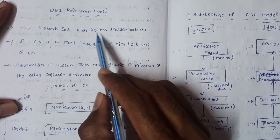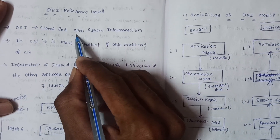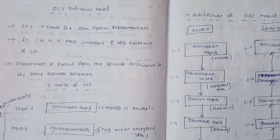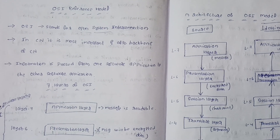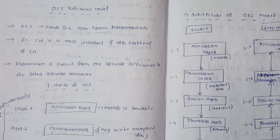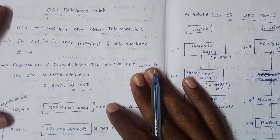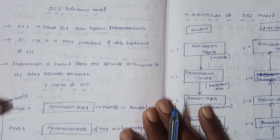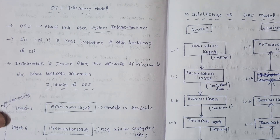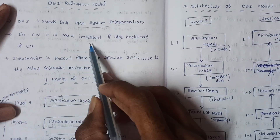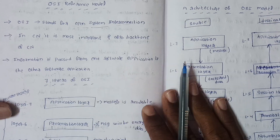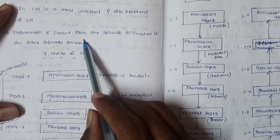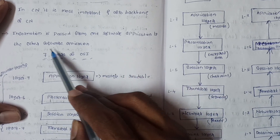OSI stands for Open System Interconnection. In Computer Networks (CN), it is the most important topic and also the backbone of CN. Information is passed from one software application to another software application.